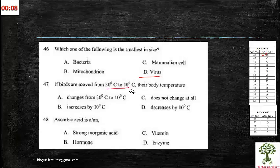If birds moved from 30 degrees to 40 degrees, the body temperature. This is a quite clear question when you know that the birds belong to homeothermic organisms. There won't be any change in the organism's temperature, so it doesn't change at all. So the answer will be C.